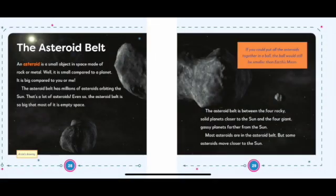The Asteroid Belt. An asteroid is a small object in space made of rock or metal. Well, it is small compared to a planet. It is big compared to you or me. The asteroid belt has millions of asteroids orbiting the Sun. That's a lot of asteroids. Even so, the asteroid belt is so big that most of it is empty space. The asteroid belt is between the four rocky solid planets closer to the Sun and the four giant gassy planets further from the Sun. Most asteroids are in the asteroid belt, but some asteroids move closer to the Sun.